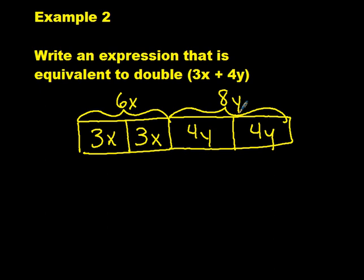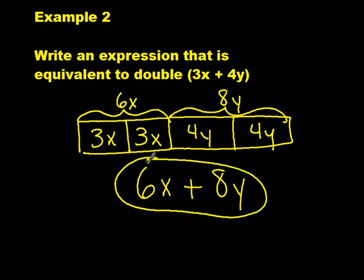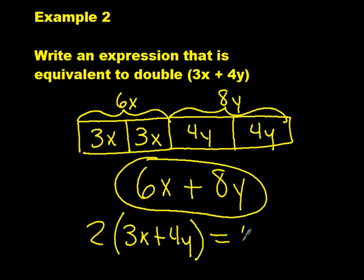As you can see, there are 6 x's and 8 y's, which is the same as 6x plus 8y. So, 2 times the sum of 3x plus 4y is equal to 6x plus 8y.